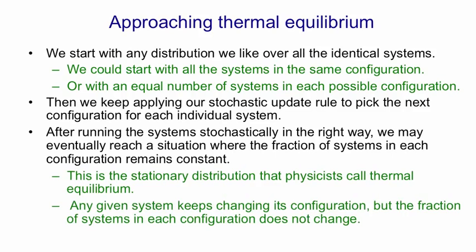Any given system keeps changing its configuration. We apply the update rule and the states of its units will keep flipping between zero and one. But the fraction of systems in any particular configuration doesn't change, and that's because we have many many more systems than we have configurations.